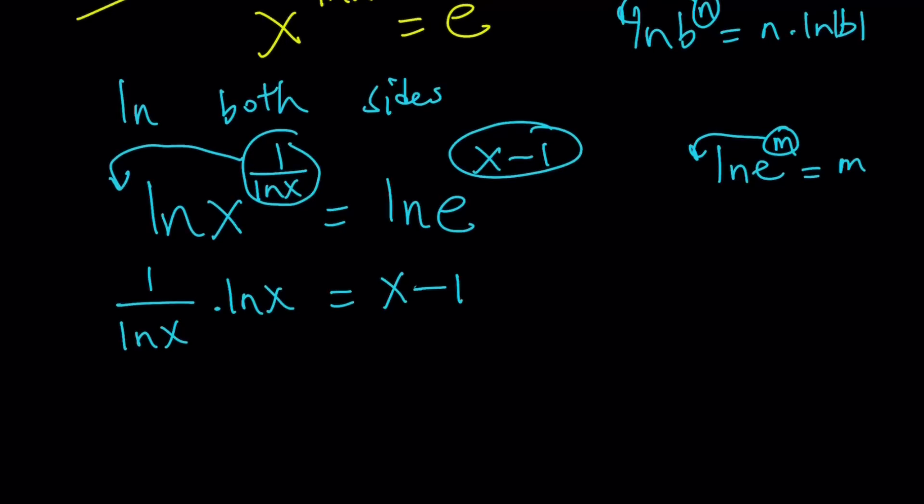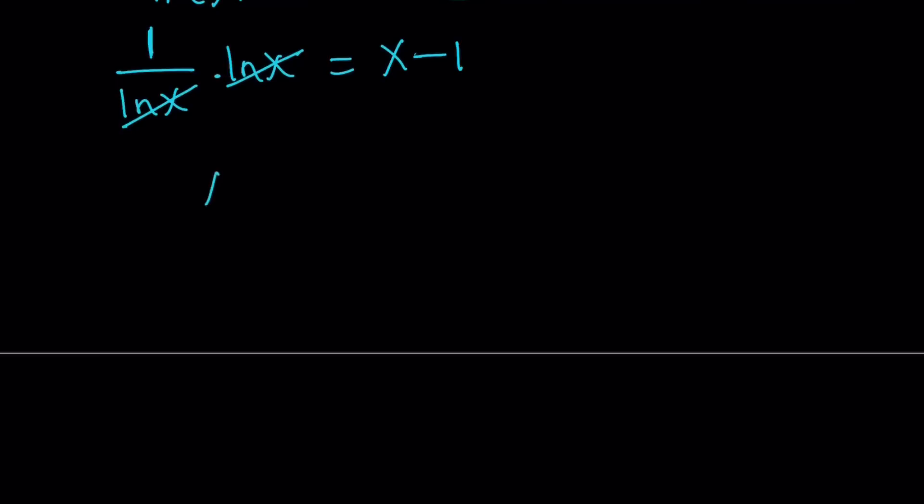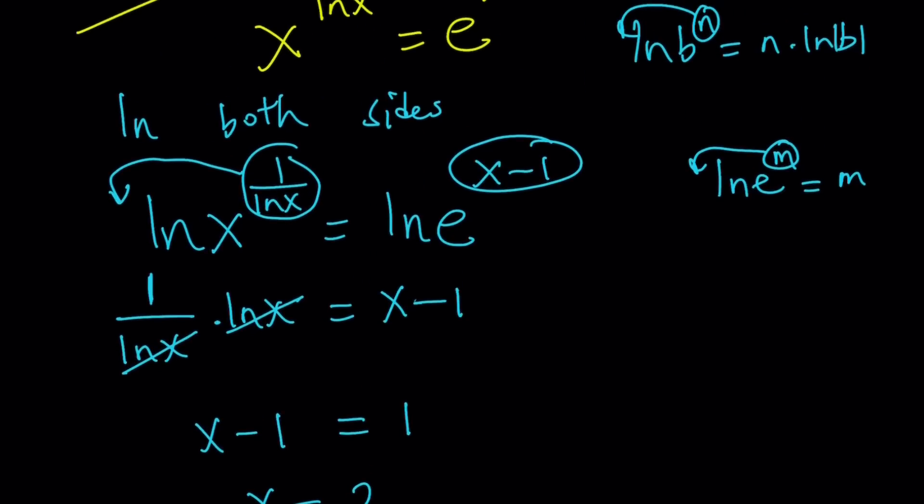Now here, just like before, ln x cancels out, and that leaves us with 1 on the left-hand side, which means x minus 1 is equal to 1, and that means x is equal to 2. Now we didn't get x equals 1 here.